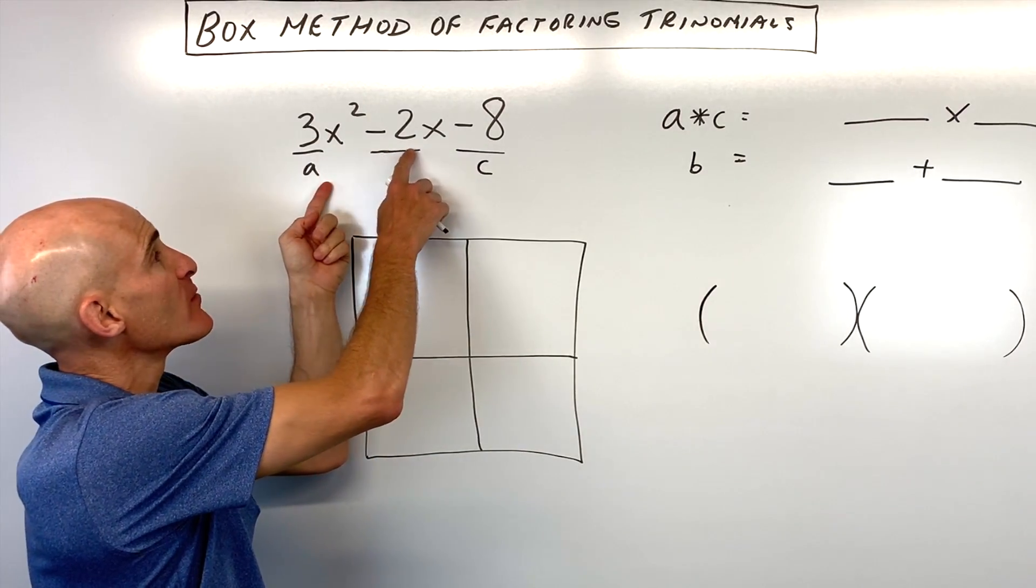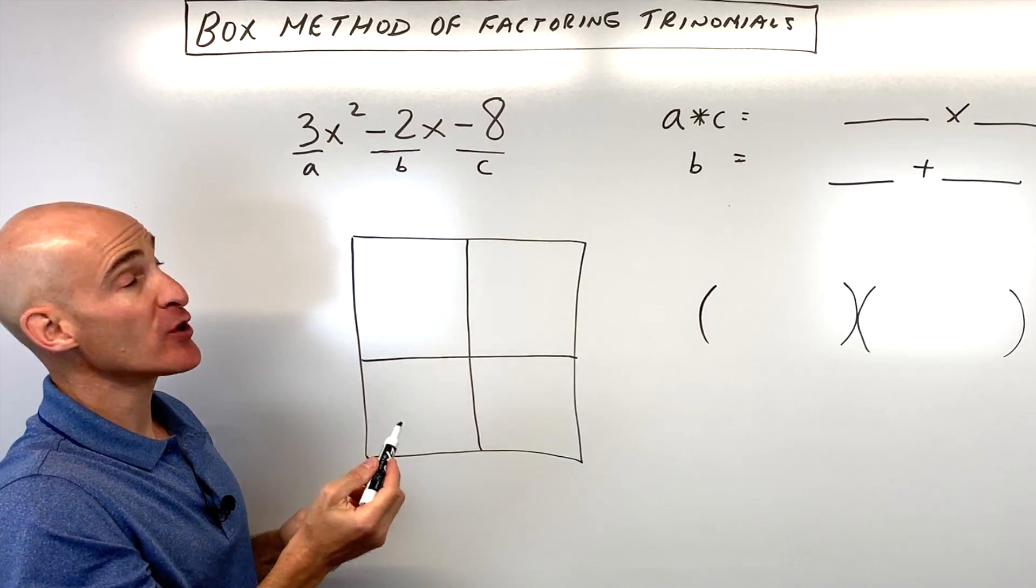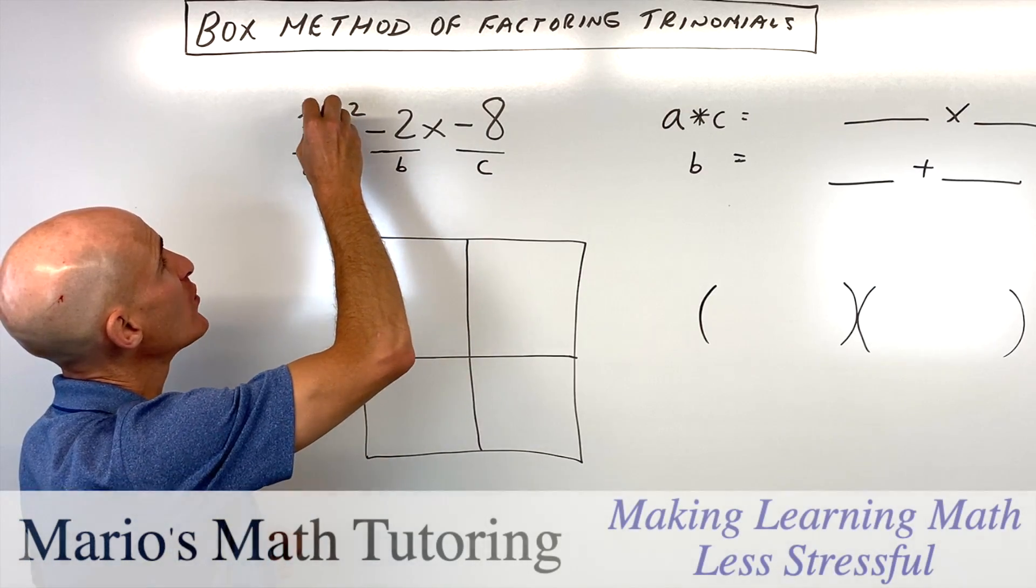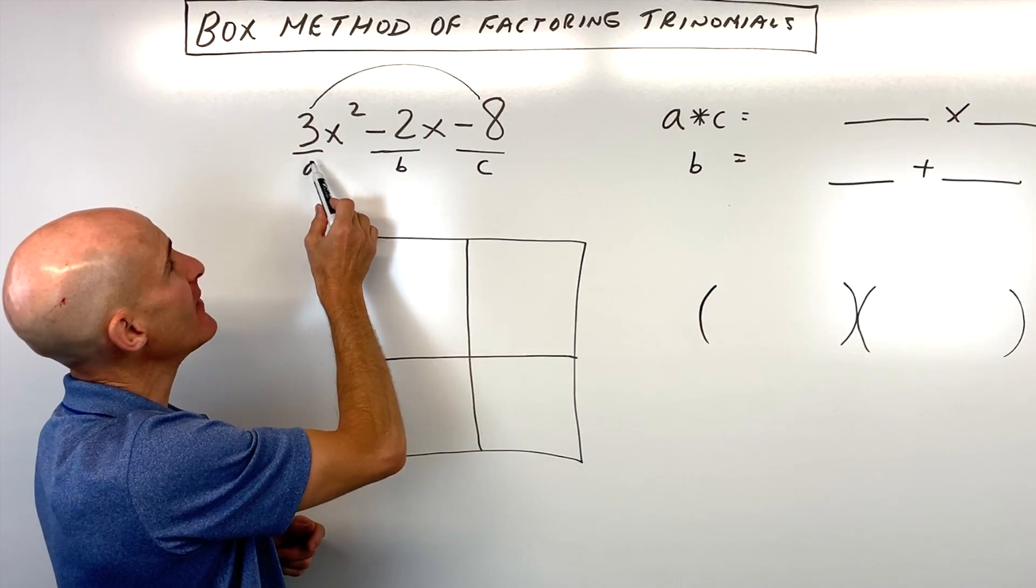So we have this trinomial 3x squared minus 2x minus 8, and what you want to do with the box method of factoring is you want to multiply the a value times the c value.